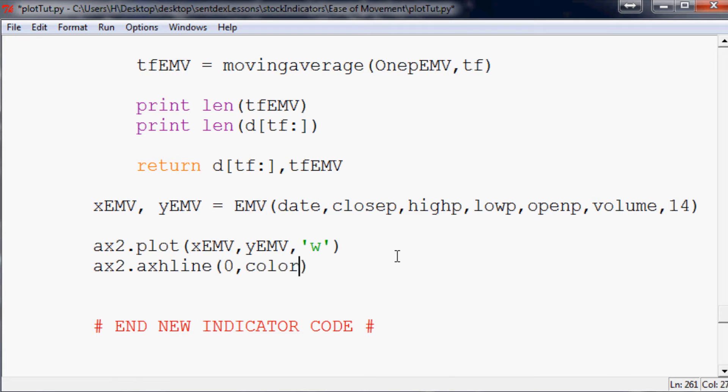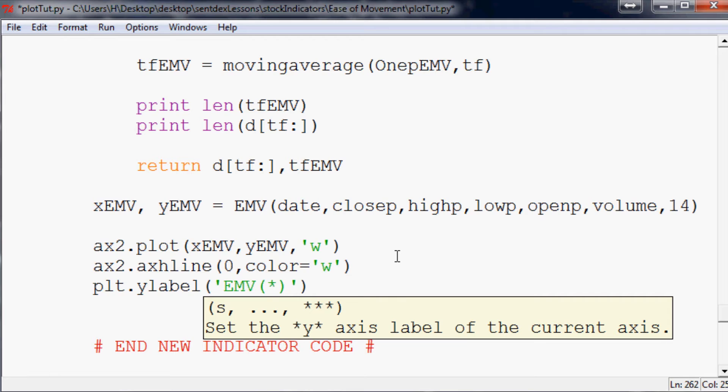Next, what do we want? We want to add that label, right? So plt.ylabel - what do we want that label to say? Probably say what it is: EMV 14. And then what color does it want to be? It also wants to be white so we can actually see it.